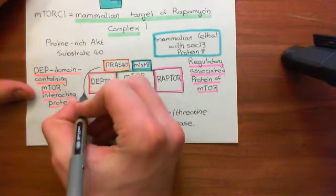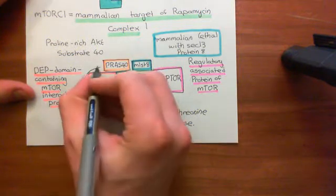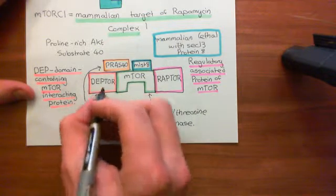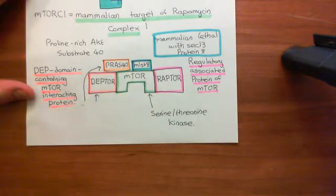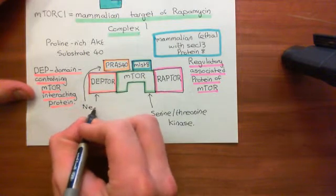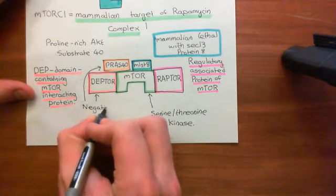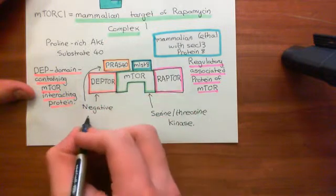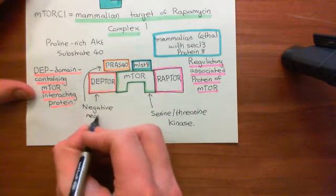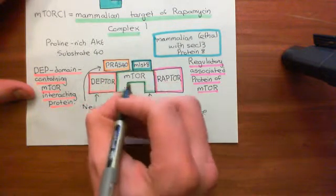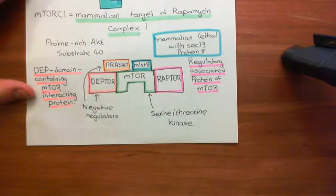It is known that PRAS40, the proline-rich AKT substrate 40, and DEPTOR, the DEP domain containing mTOR interacting protein, are negative regulators. So when they are bound to mTOR in this way, they are actually decreasing the activity of mTOR. By binding to mTOR, they stop it from adding phosphate groups onto serine and threonine residues.